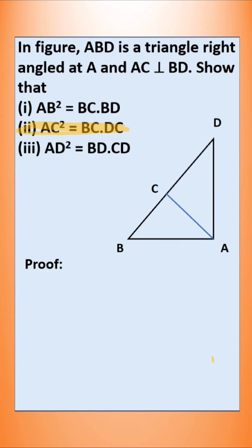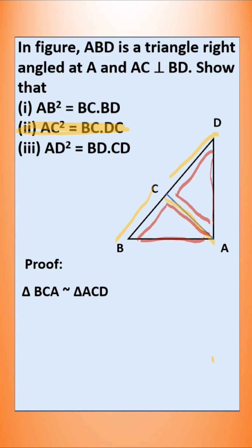Here, we need to prove AC squared is equal to BC into DC. Now we have to concentrate on these two triangles. Triangle BCA and triangle DCA — both are similar. We have proved it in the previous problem. So, triangle BCA is similar to triangle ACD.